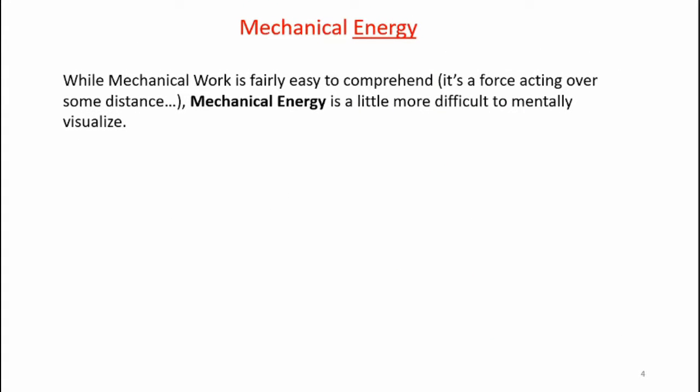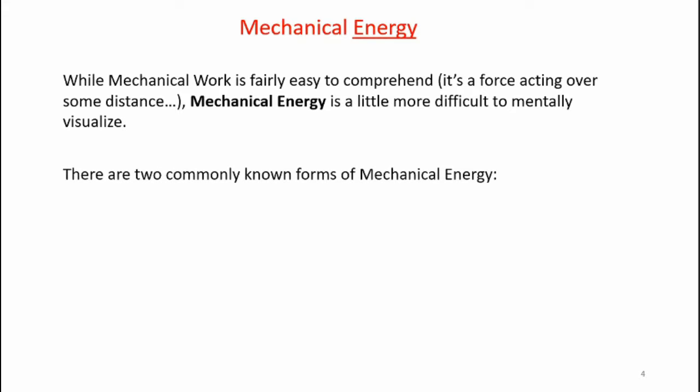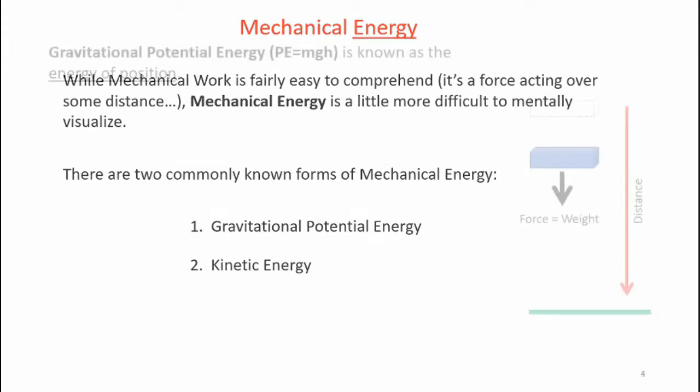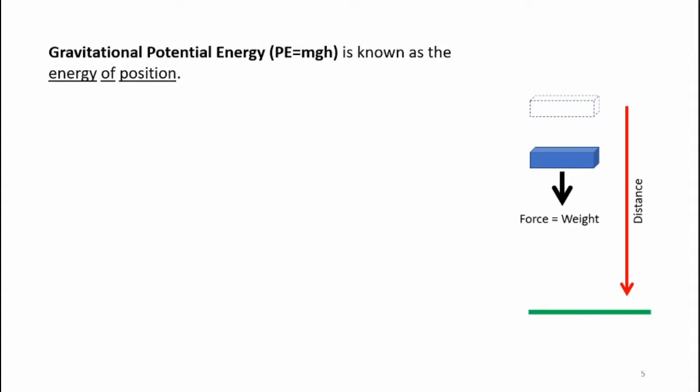While mechanical work is fairly easy to comprehend — it's a force acting over some distance — mechanical energy is a little more difficult to mentally visualize. There are two commonly known forms of mechanical energy. One is gravitational potential energy, and the other is kinetic energy. Gravitational potential energy, PE equal to MGH, is known as the energy of position.